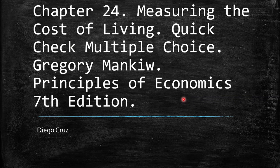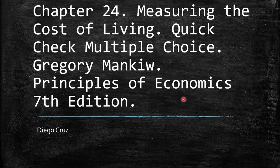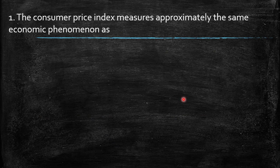Welcome to this video. We're going to talk about quick check multiple choice. This is chapter 14, measuring the cost of living. This is a book of Gregory Mankiw, Principles of Economics. The first question says the consumer price index measures approximately...